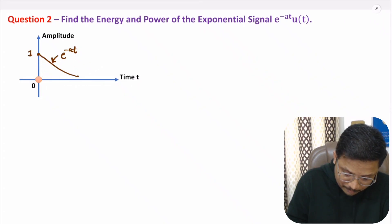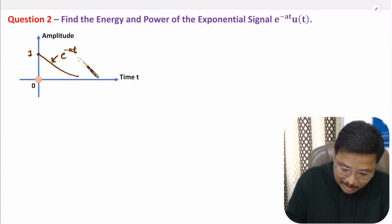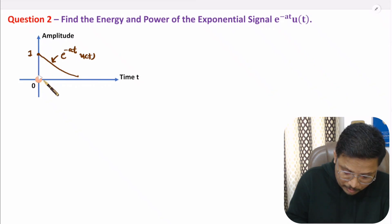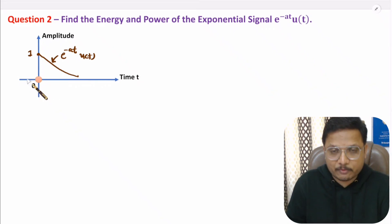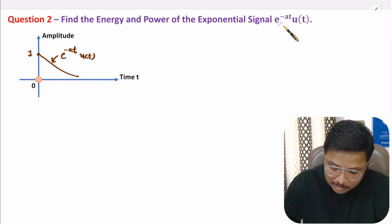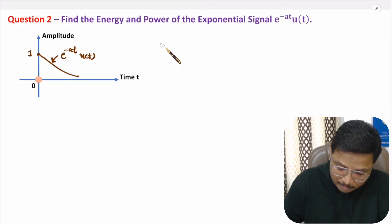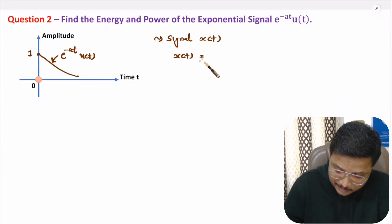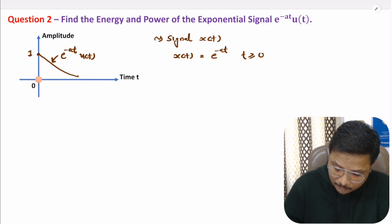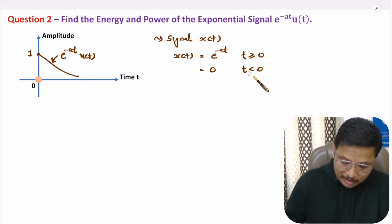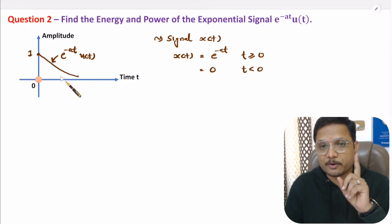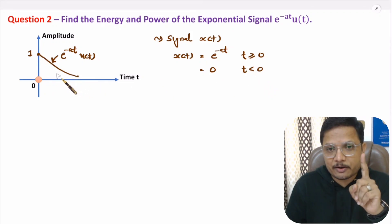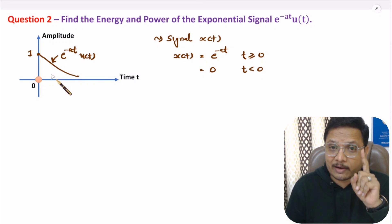Here we have magnitude one at t equals zero, since e to the power 0 is 1. And if you multiply u(t), then for t less than 0 we will have zero value. So the function x(t) is e to the power minus at for t greater than or equal to 0, and zero for t less than 0. And if you observe this signal, it is not periodic. As it is not periodic, we need to identify the energy of the signal first.